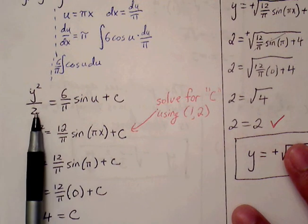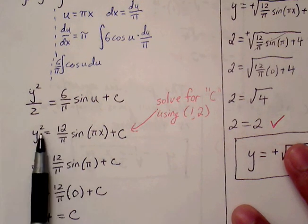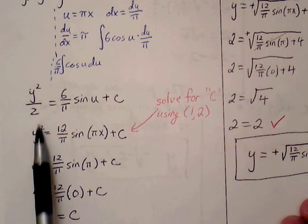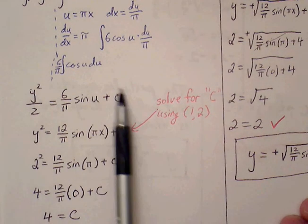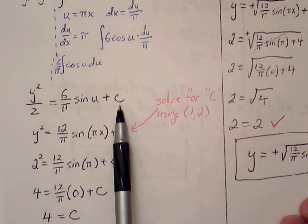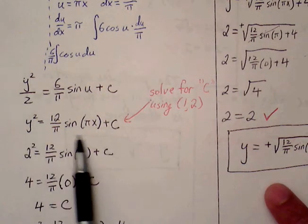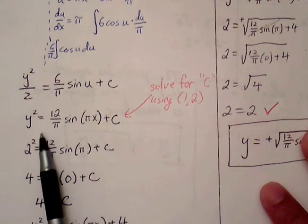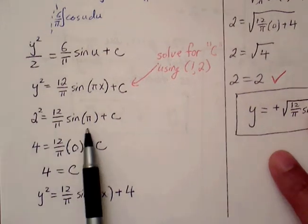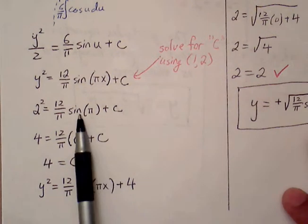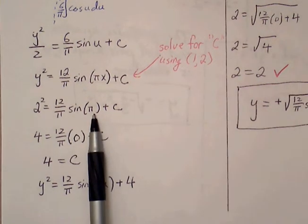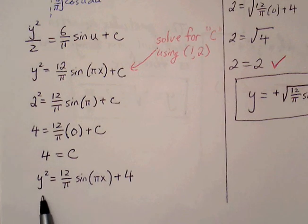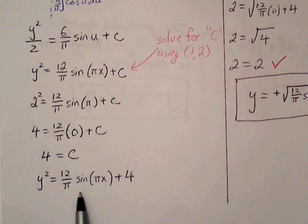I'm going to multiply through by 2, so y squared equals 12/π times sine(πx) plus c — since 2 times c is still just c. Now I'll plug in the ordered pair (1, 2): 1 for x and 2 for y. We get 4 equals 12/π times sine(π) plus c. Sine of π is simply 0, so anything times 0 remains 0. The left side is just 4, so c equals 4. Therefore y squared equals 12/π times sine(πx) plus 4.